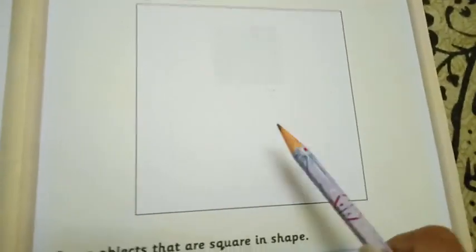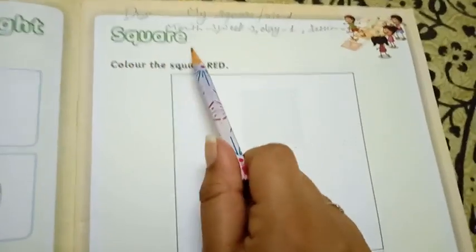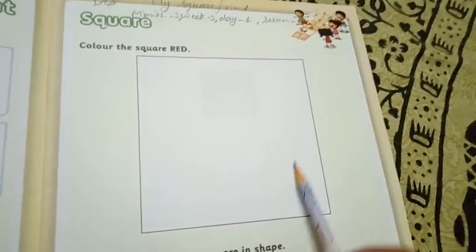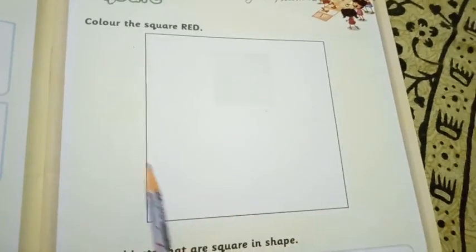So do you want to know the name of the shape? Yes. So children the name of the shape is Square. What? Square. The name of the shape is Square. What is this children? Square. Which shape is? Square shape.